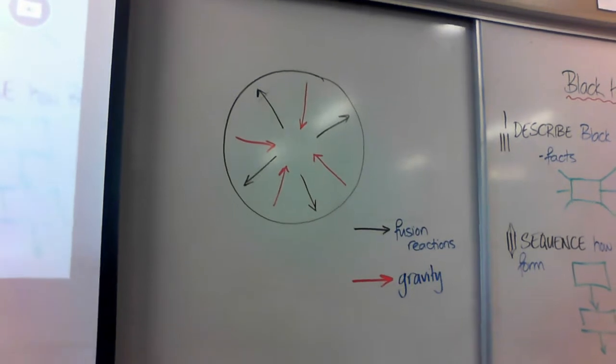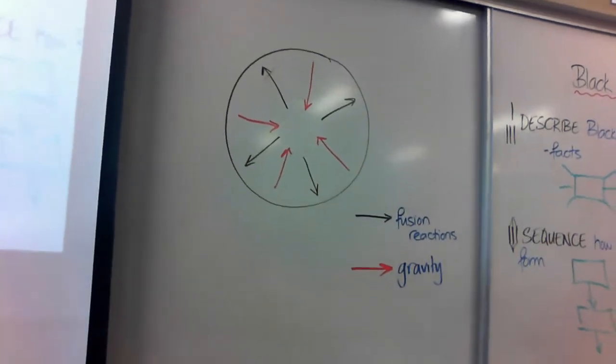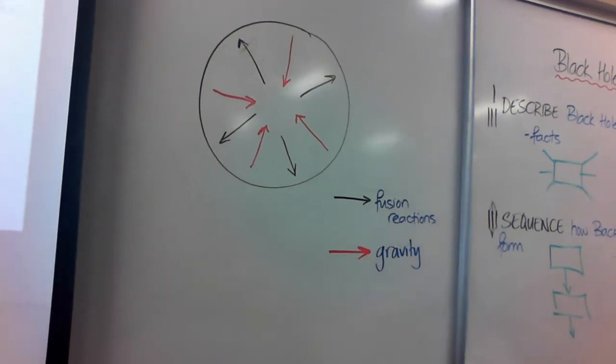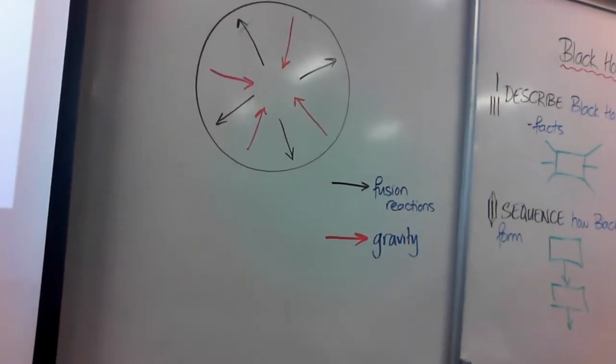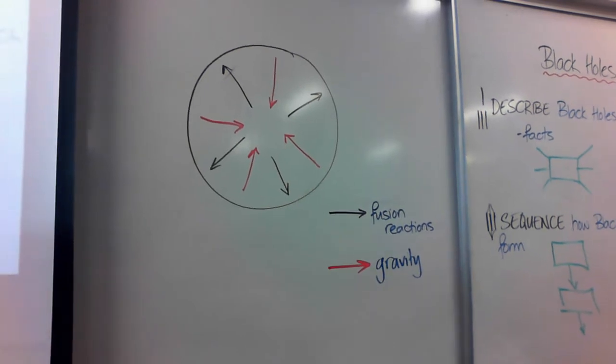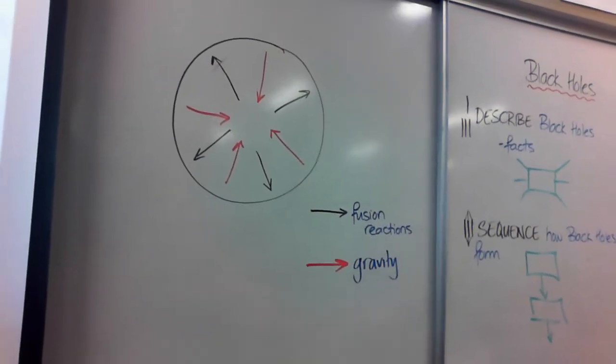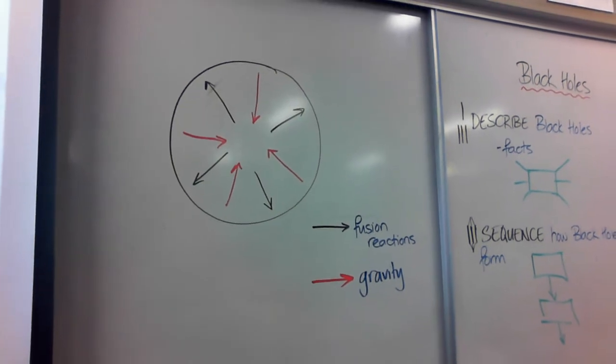What happens in a sun is there are reactions called fusion reactions. A fusion reaction is where atoms or elements bang together and they make bigger ones. When that happens, it also creates energy and it creates an outward pressure on the star.